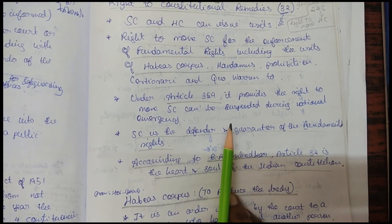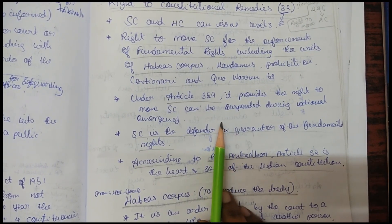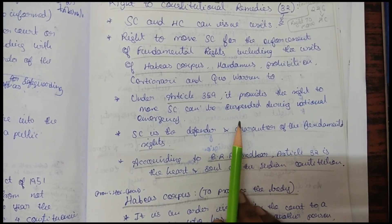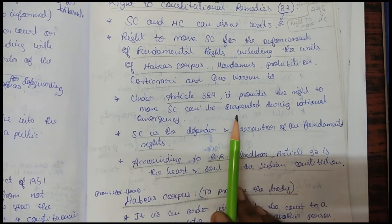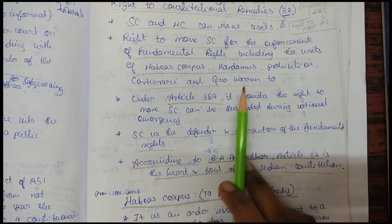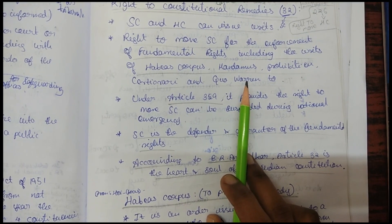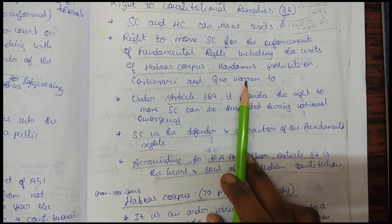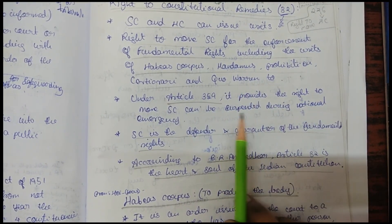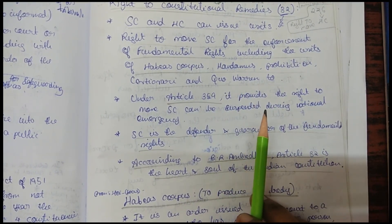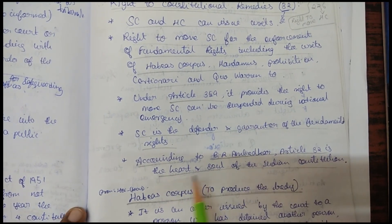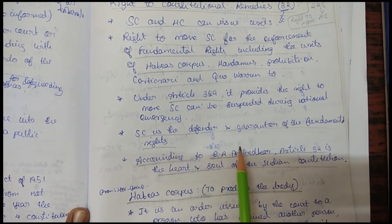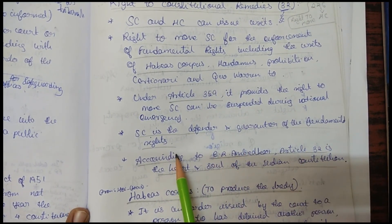Article 359 provides that Article 32, the right to constitutional remedies, can be suspended during a national emergency. The Supreme Court is the defender and guarantor of fundamental rights.